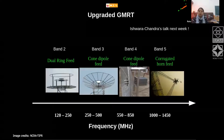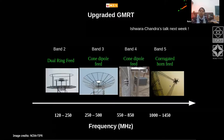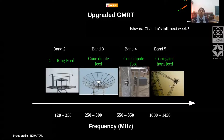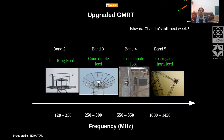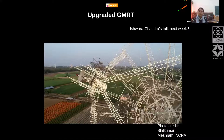At the feed of the GMRT, you will see these dipoles mounted on different faces, and whichever face faces the dish will collect the radiation reflected from the surface of the dish. In this experiment, we are going to see the data collected by these dipoles. Typically data are recorded in two polarizations.